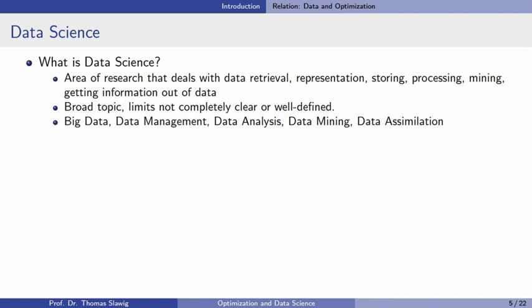The second part is data science. Data science is a wide area of research because data is everywhere, and it is a hot topic nowadays. It is not always quite clear what is meant by it. One point is the retrieval of data, the representation of data, storing of data, processing of data, data mining, and retrieving information or knowledge out of the data. This is a broad topic and the limits of data science are not completely clear or well defined.